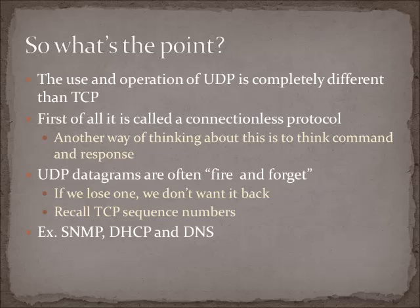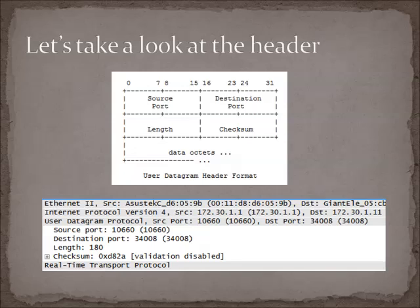Another key use of UDP is real-time data — video and voice. If we lose a packet in a real-time stream, we don't necessarily want that packet retransmitted, because voice packets arriving out of order would make the conversation disruptive. So when we lose something in those streams, we just move on. Those are the basic places UDP finds a home: command-and-response, or real-time streams. Applications like VoIP, video, SNMP, DHCP, and DNS are also examples that use UDP at layer 4.